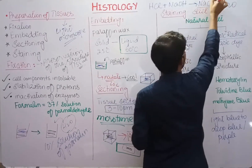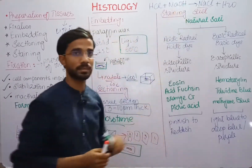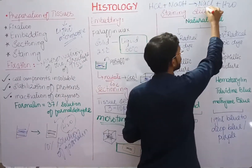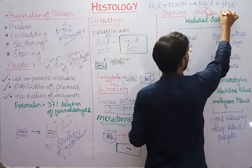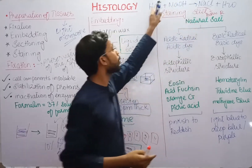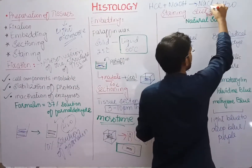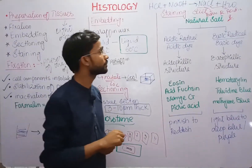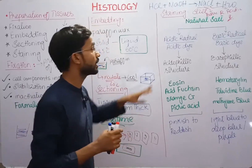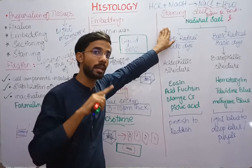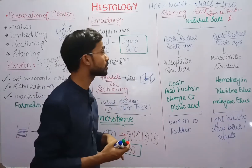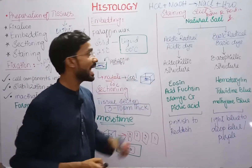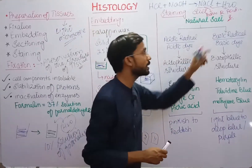In sodium chloride, sodium is positive and chloride is negative. Sodium comes from the base, so due to sodium being derived from the base, it is called the basic radical. Chlorine or the chloride ion comes from the acidic part, so it is called the acidic radical. Dyes are basically natural salts — salts having two radicals. They can be acidic or basic, depending on which radical produces the color.